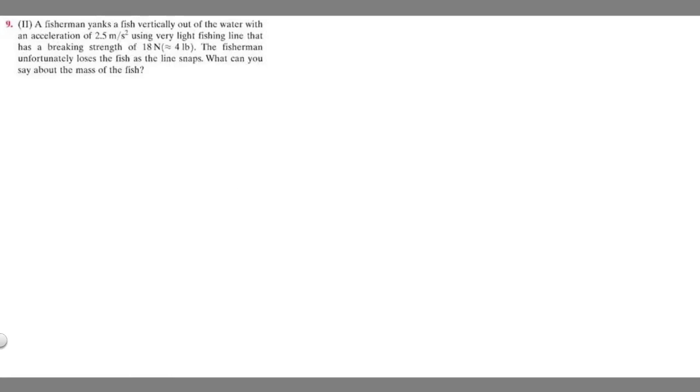In this problem, we're told a fisherman yanks a fish vertically out of the water with an acceleration of 2.5 meters per second squared, using very light fishing line that has a breaking strength of 18 newtons. The fisherman unfortunately loses the fish as the line snaps. What can you say about the mass of the fish?